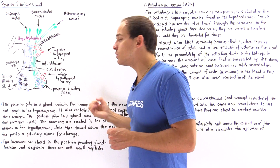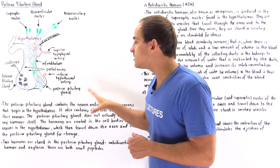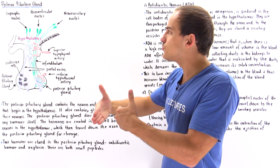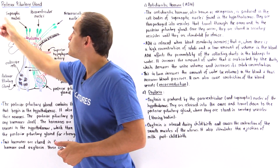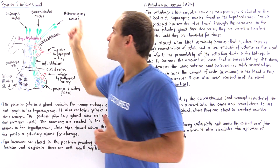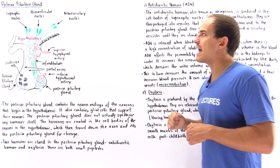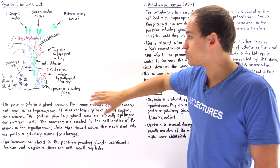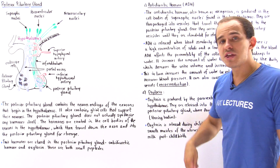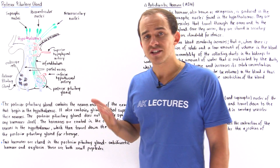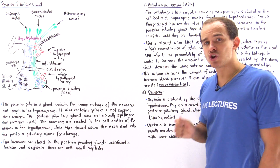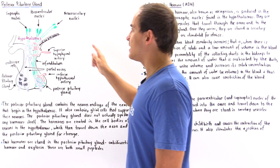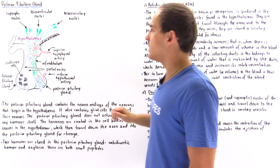Even though the posterior pituitary gland stores two hormones, it doesn't actually produce them — they are produced in the hypothalamus. In the hypothalamus we have three groups of nuclei: the supra-optic nuclei, the paraventricular nuclei, and the neurosecretory nuclei. The two hormones produced there and stored in the posterior pituitary are the antidiuretic hormone (ADH), also known as vasopressin, and oxytocin. Both are small polypeptides synthesized in the rough endoplasmic reticulum of the cell bodies of these nuclei.